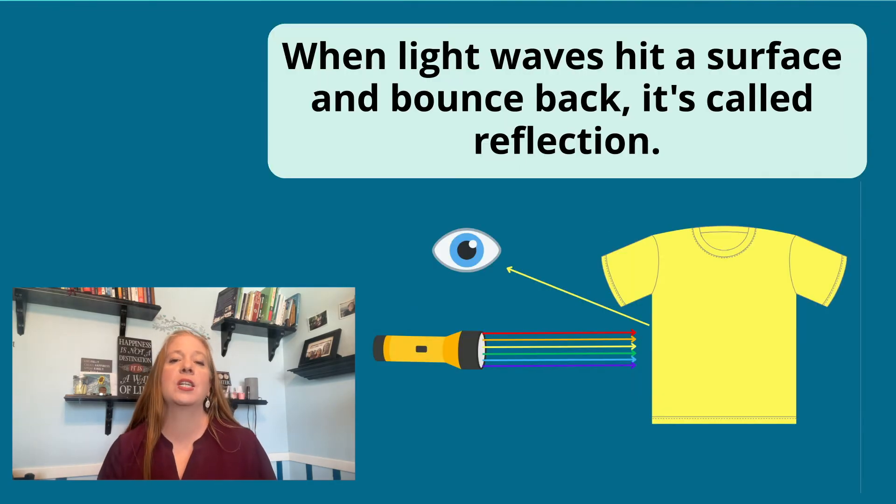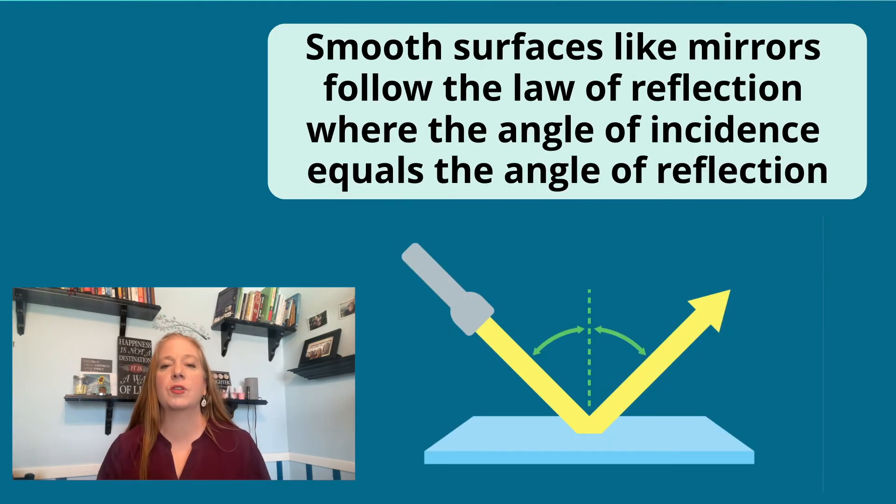When light waves hit a surface and bounce back, it's called reflection. Smooth surfaces like mirrors follow the law of reflection where the angle of incidence equals the angle of reflection.